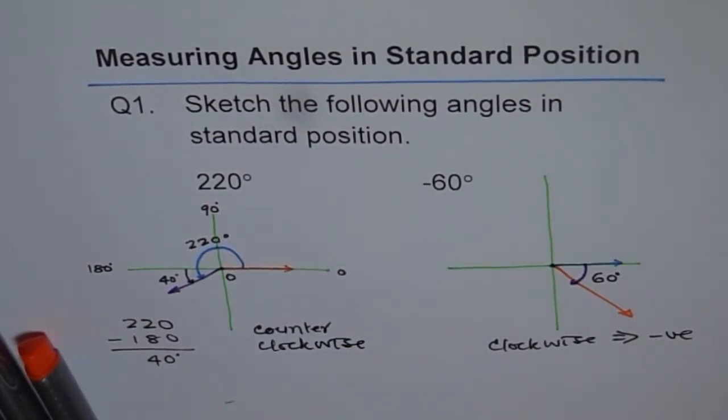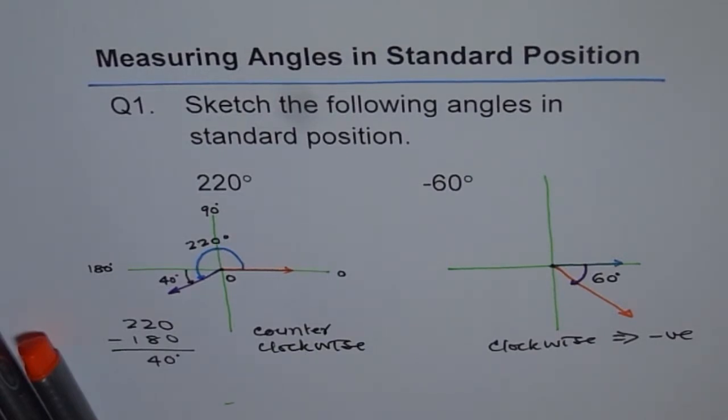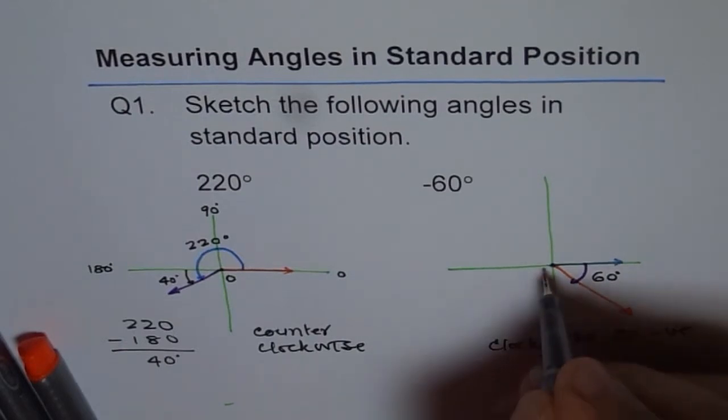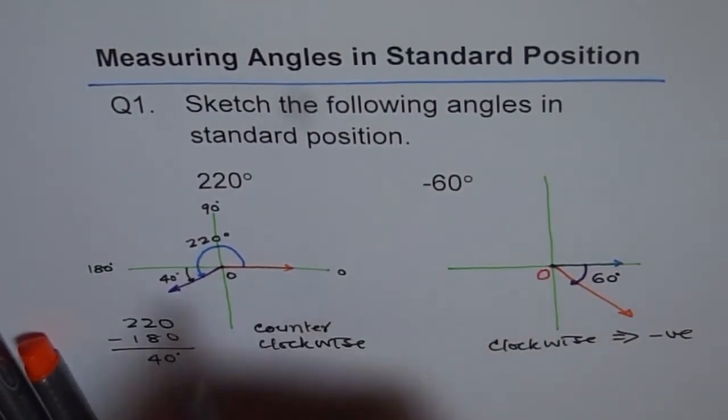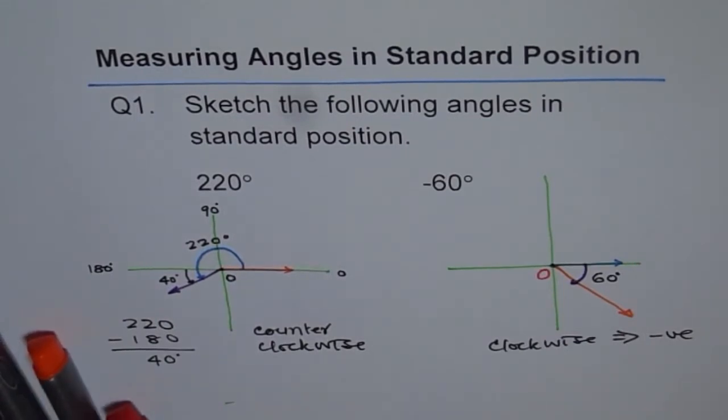So this question number one is basically to reconfirm with you the understanding of angles in standard position. Most important point here is that the vertex should be at origin O. Do you see both the places? Vertex is at origin O, and then we have an initial arm.